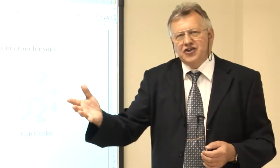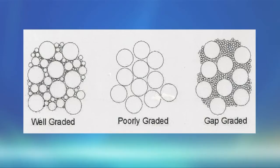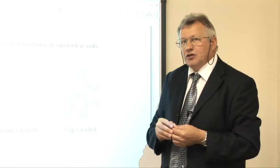We know from engineering practice that the density of construction materials is identified by mass divided by volume. For soil, the most important component is the solid grain coming from rock. Between those grains we have air space — we have voids in the soil. The ratio between the volume of the voids and the volume of the solid is a very important soil property, called the void ratio.